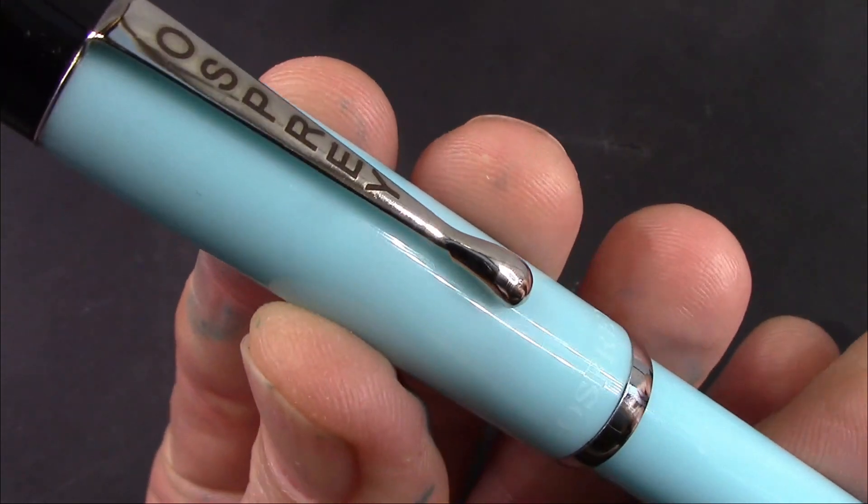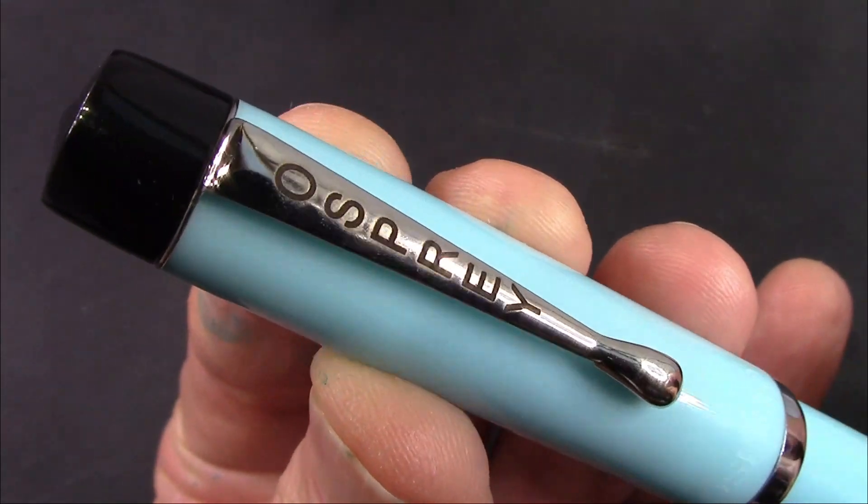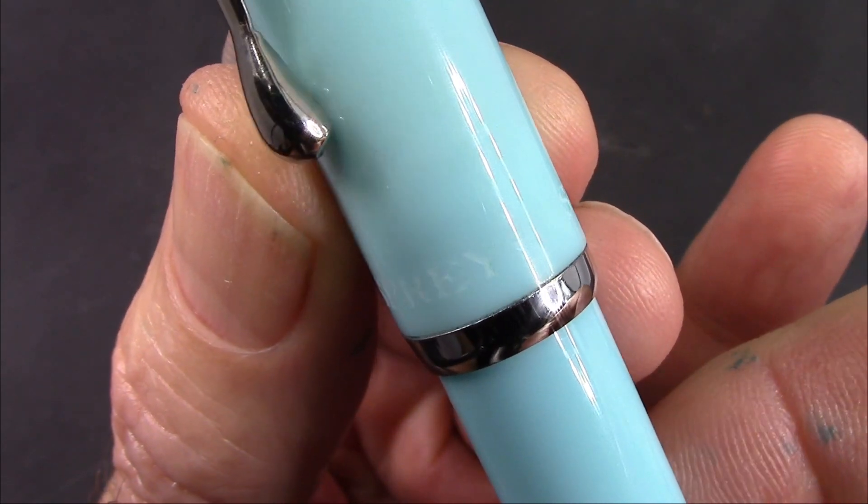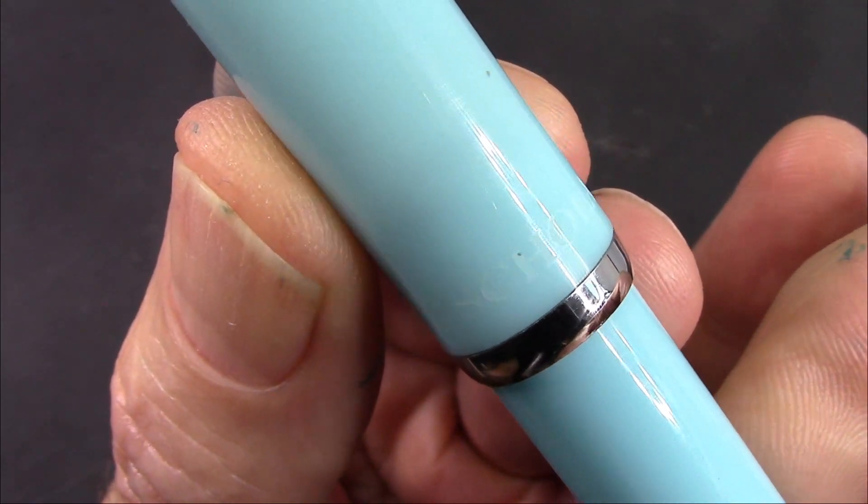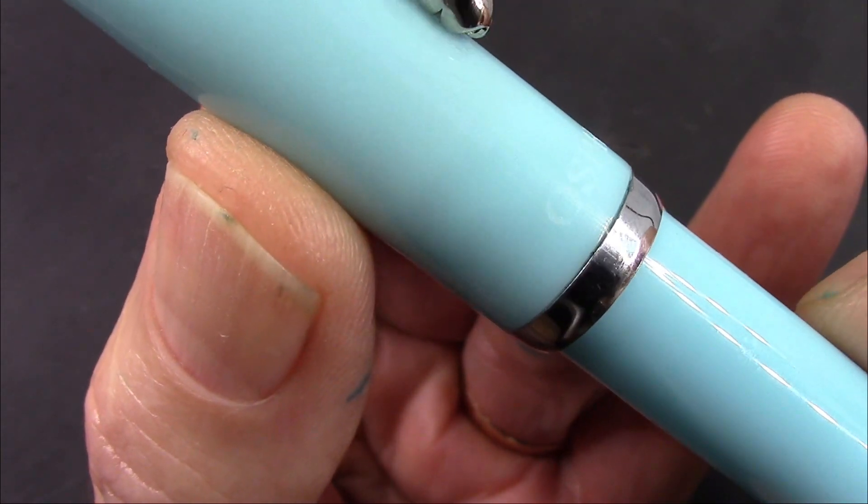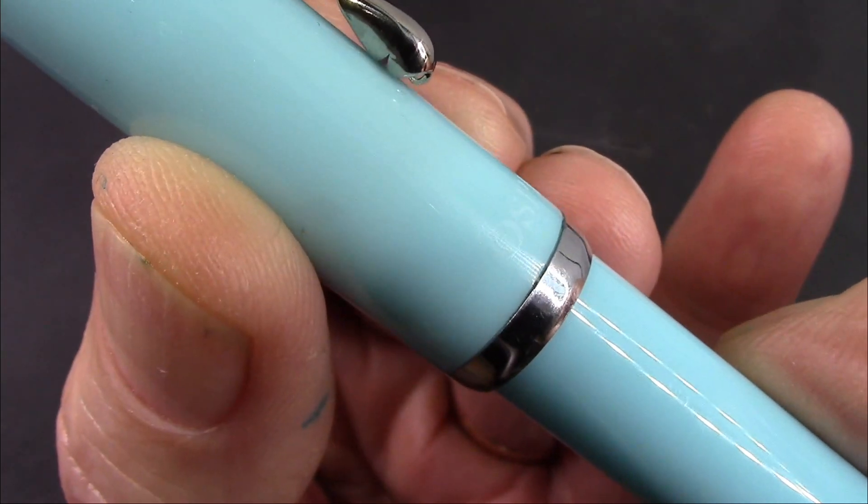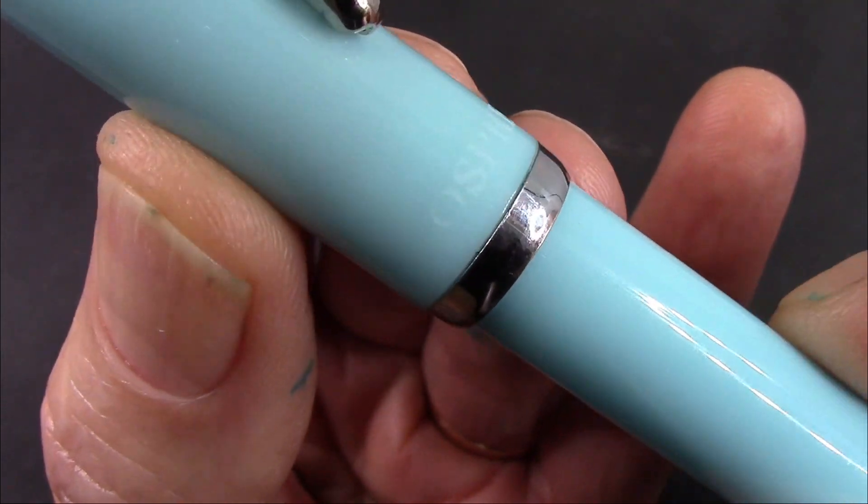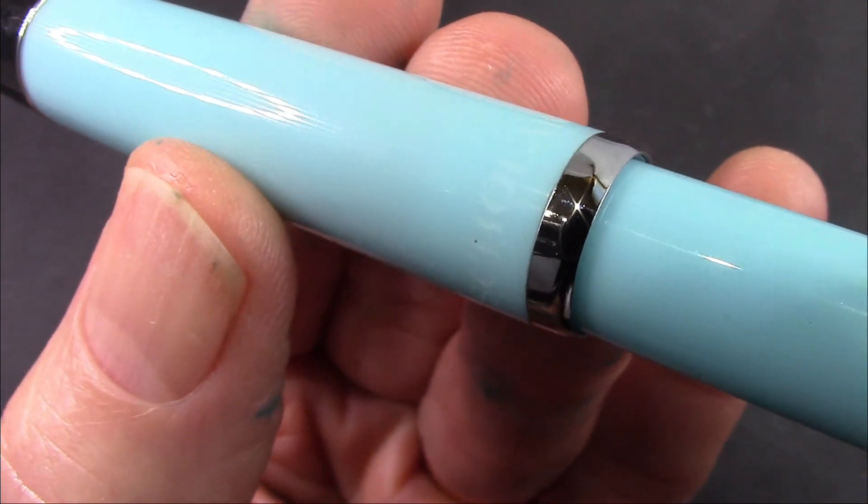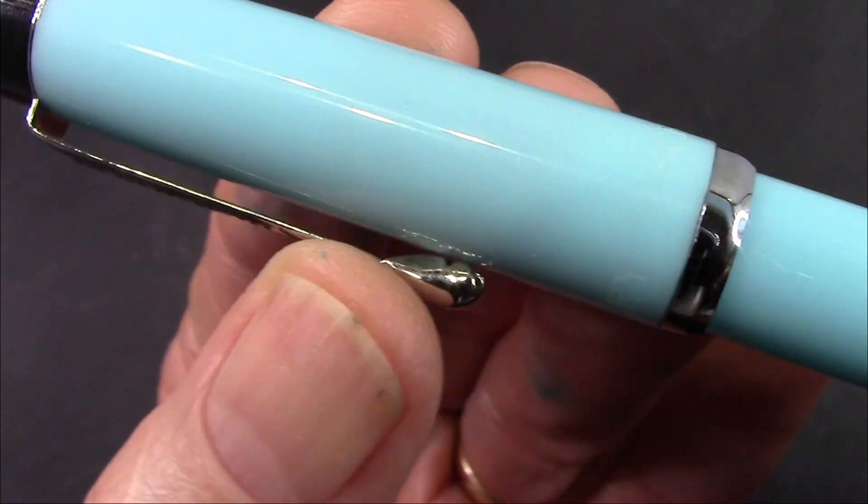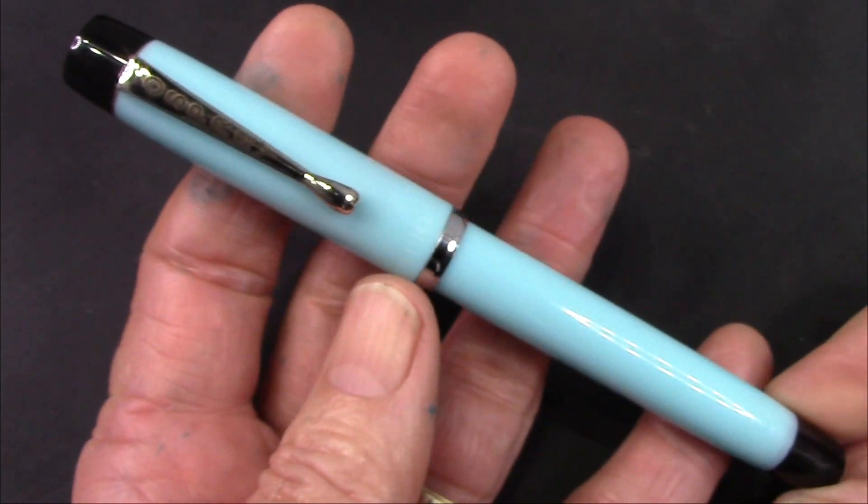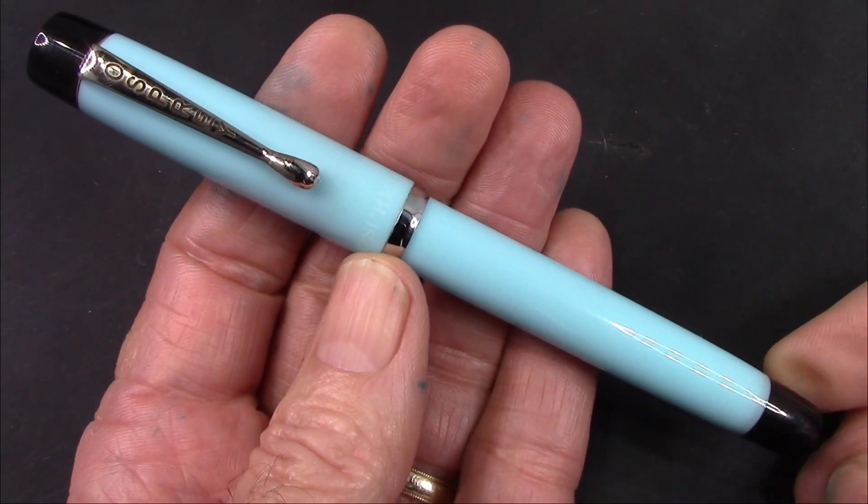One thing that's always interesting when you use a pen for a little bit is they've engraved Osprey and Scholar right above that cap band at the end of the cap. Interesting little touch. Subtle for certain, but it certainly identifies the pen, and I think that's nice. I wish every pen had some identification on it. Trying to find out what a vintage pen is can sometimes be extremely challenging.